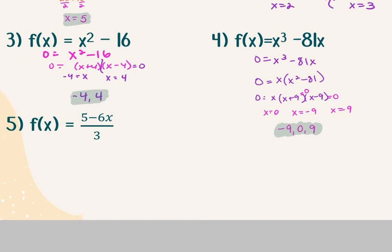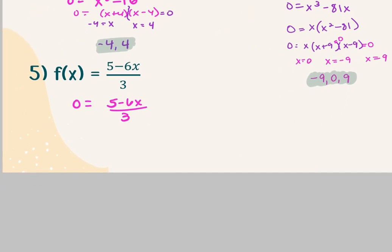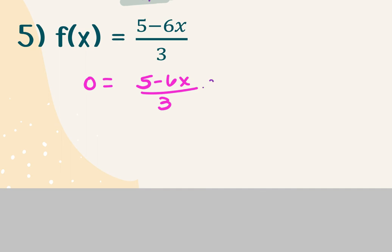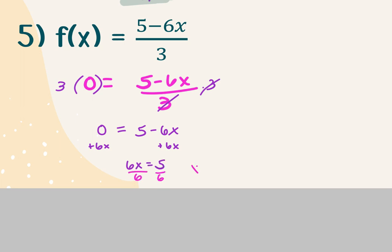For the last one on this slide, plug 0 in for f of x, then multiply 3 on both sides, giving 0 equals 5 minus 6x. Add the 6x, divide by 6, and x is 5 sixths. Remember you want to keep answers exact — if it's a fraction that can be simplified, simplify it, but keep it exact and improper.